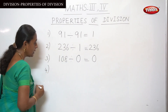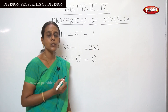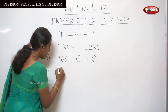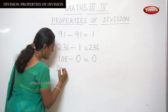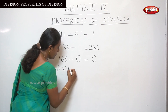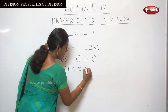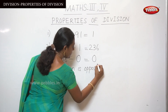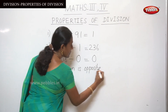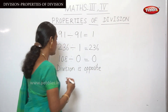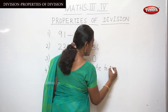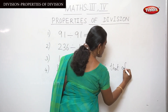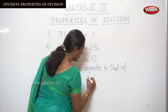The fourth point: division is opposite to multiplication. That is a notable point — division is the inverse operation of multiplication.